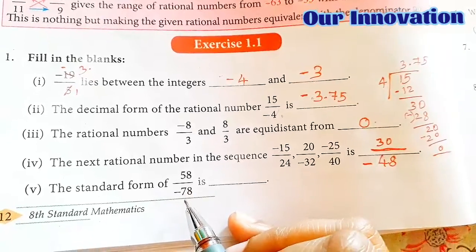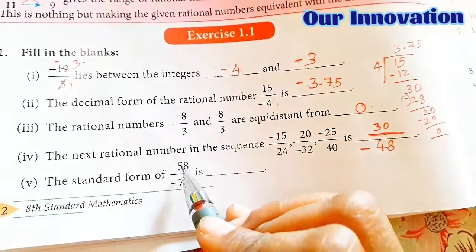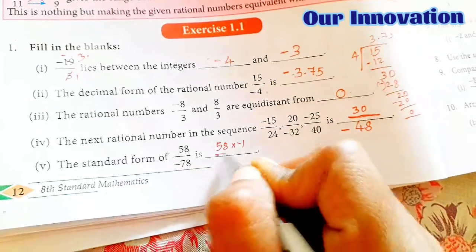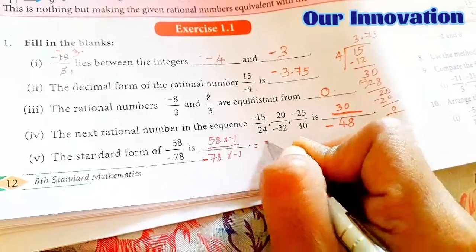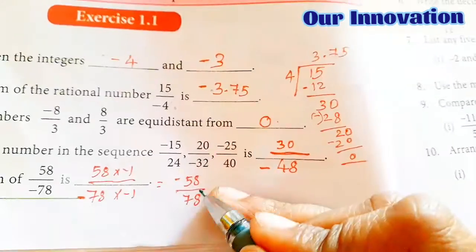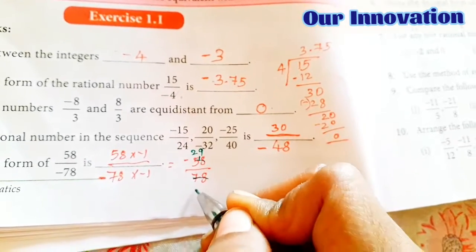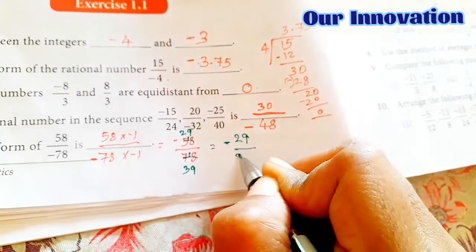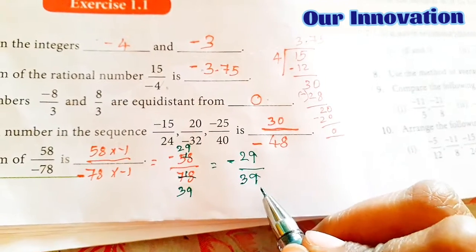Fifth one: the standard form of 58 by minus 78. So write the standard form — cancel the common factors. 2 twos are 4, balance 1; 9 twos are 18. Next 3 twos are 6, balance 1; 9 twos are 18. This is equal to minus 29 by 39. So this is the standard form: minus 29 by 39.